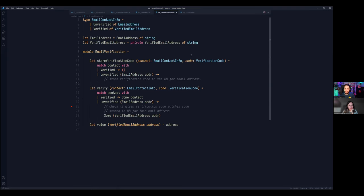So the email module was rewritten again. The email contact info type is now part of this file and part of this module. It's now a sum type. It has two constructors. It's either unverified with the email address type or it's verified with the verified email address type. Here you can see that email address is still a string and its constructor is public and verified email address is also just a string, but its constructor is private and uses again the smart constructor pattern.